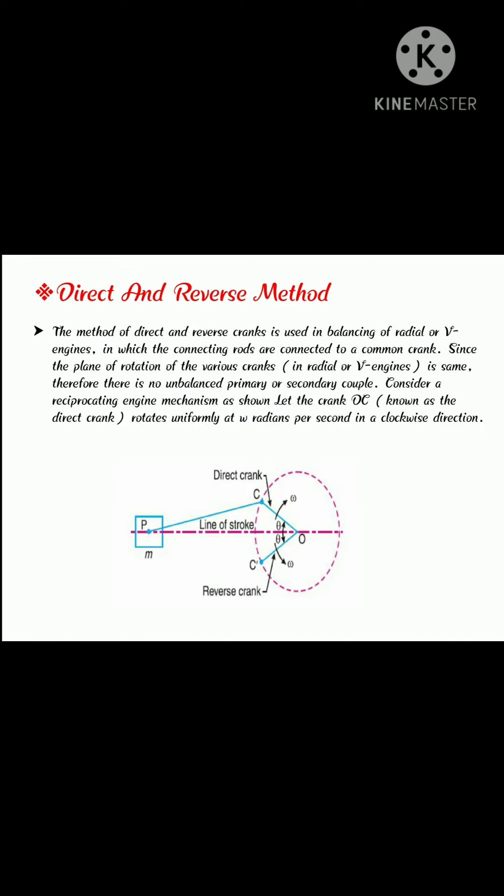We are discussing direct and reverse crank method. The method of direct and reverse cranks is used in balancing of radial or V engines in which the connecting rods are connected to a common crank. Since the plane of rotation of the various cranks in radial or V engines is same,